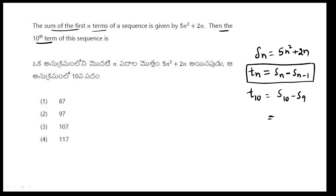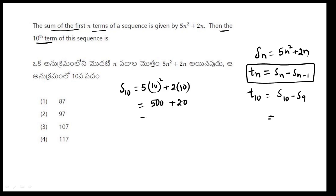For S(10), substitute n = 10 into the formula. 10 squared is 100, 100 into 5 is 500. Plus 2 times 10 is 20. So S(10) = 520.